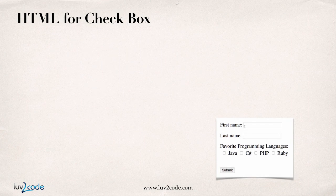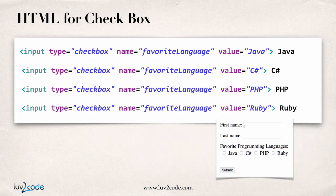Let's look at the code for HTML checkboxes. It's very similar to radio buttons — the only difference is the actual input type. Instead of type radio, we say type equals checkbox. Other than that, everything else stays the same: input type of checkbox, name favorite language, value of Java, with the label off to the far right. You just repeat that process for each language — C sharp, PHP, and Ruby. The only thing new is type equals checkbox.